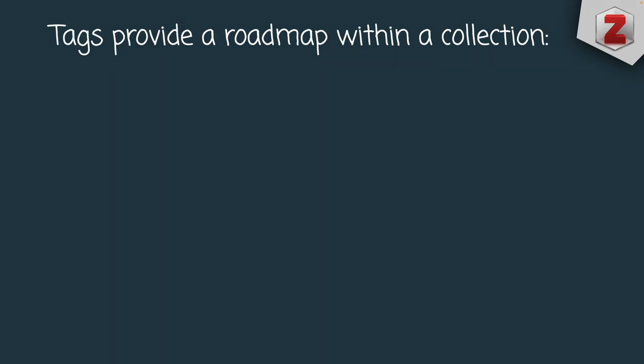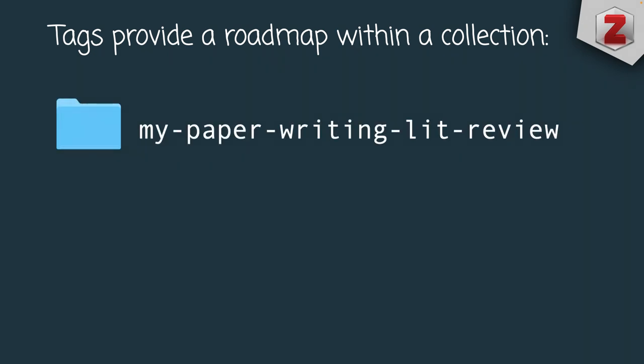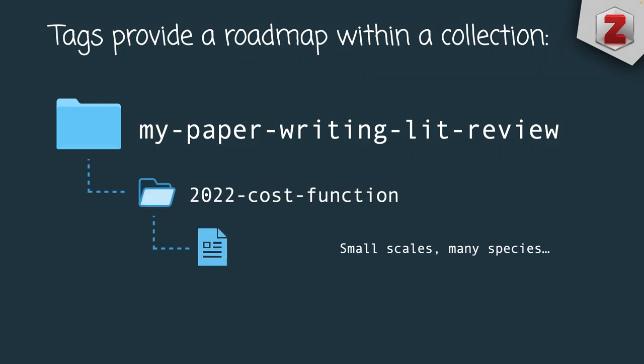The tags I have provide a nice roadmap within each collection or sub-collection. For example, within my paper writing literature review for a current project, I might have a publication flagged with four tags: I know I've read it, it's well-written, it's a big deal paper in the field, and I marked it as useful for my work. Seeing an item like this tells me I need to return to this publication often. If I open it, I might find detailed notes and highlighted sections, and this tag structure helps me decide which publications to cite in my manuscript.